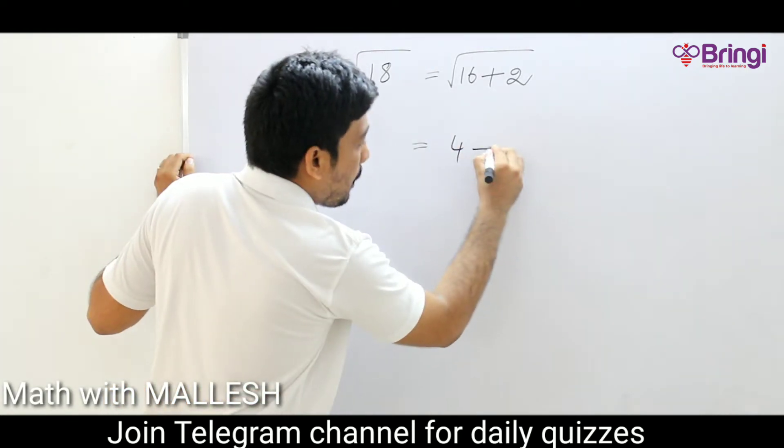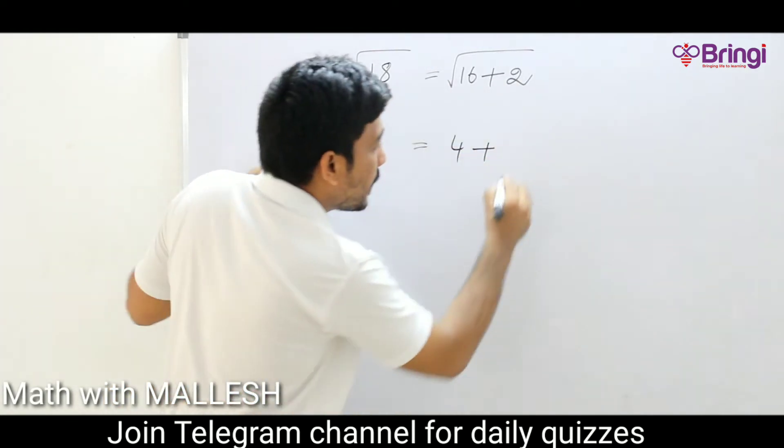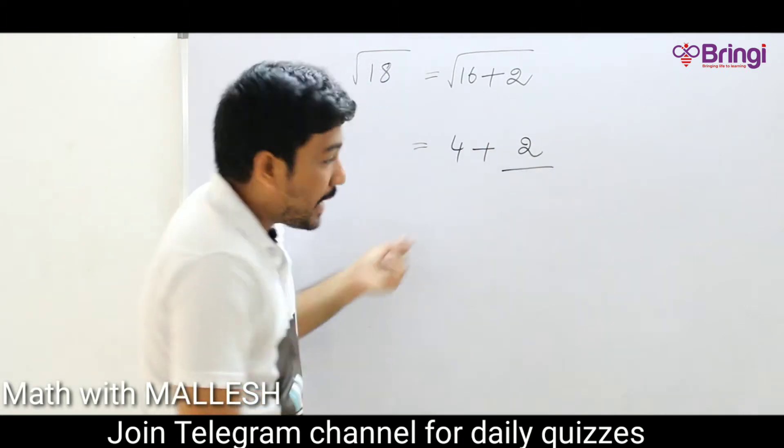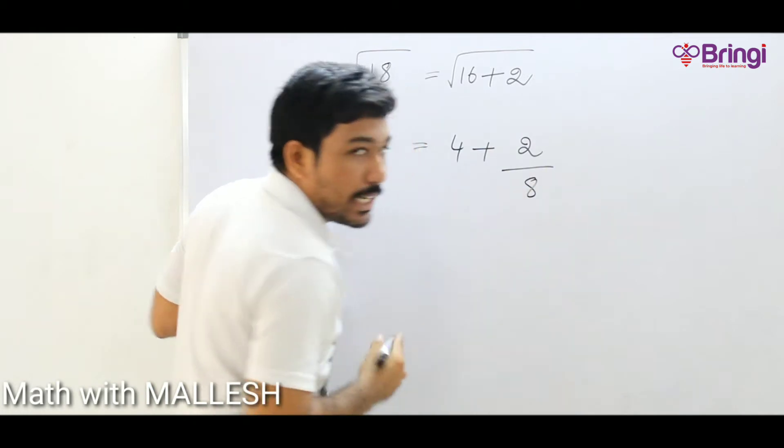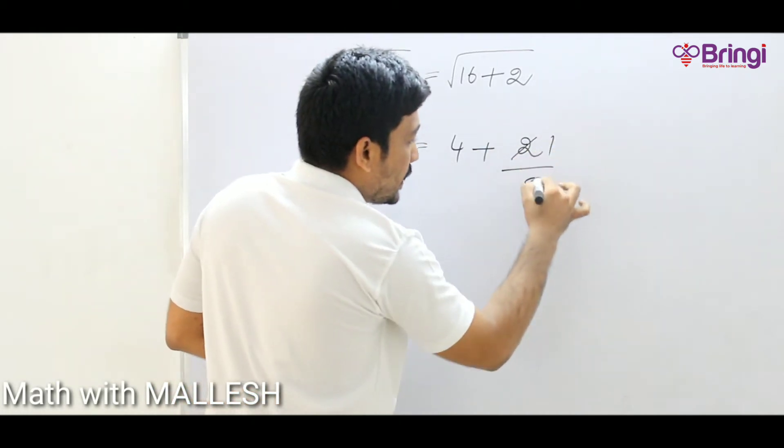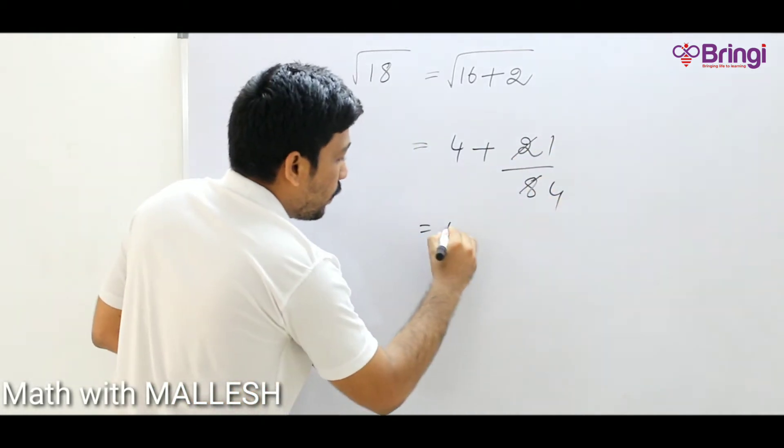Now root 16 value 4, and what is the symbol between them? Plus. Now take the remainder 2 divided by, take the 4 and double it. If you double it you will get 8. 2 divided by 8 is 0.25.